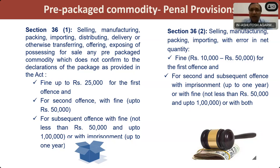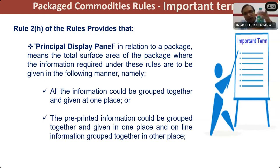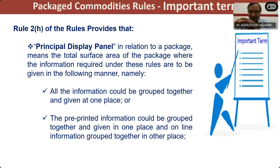Section 36 also speaks about short delivery — if the quantity is less, the first offense is compounded at 10,000 to 50,000 rupees, but for the second offense, the provision of imprisonment is made with a fine. The principal display panel — as far as Legal Metrology is concerned, the whole surface area is considered to be the principal display panel. Rule 7 of the Package Commodity Rules clearly specifies sizes of letters and numerical declarations. All declarations will be made at one place, so that the consumer is not confused trying to find declarations at different sides of the package.